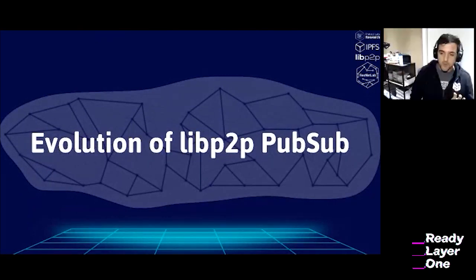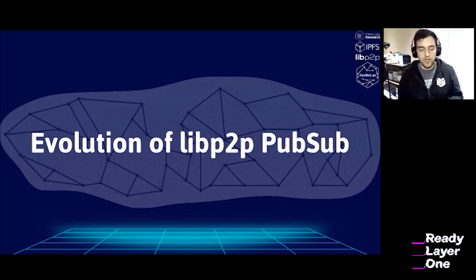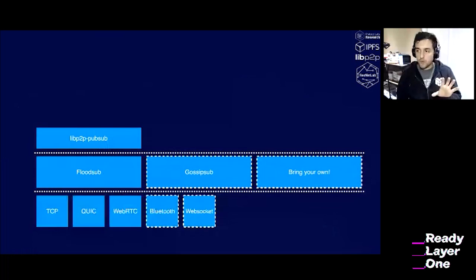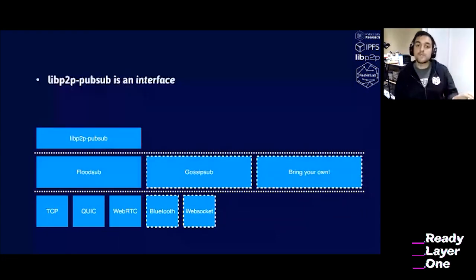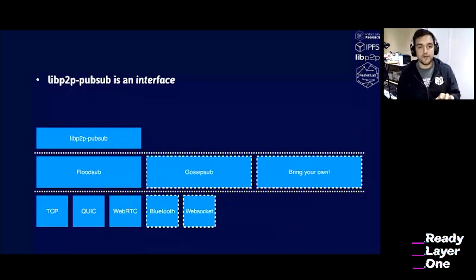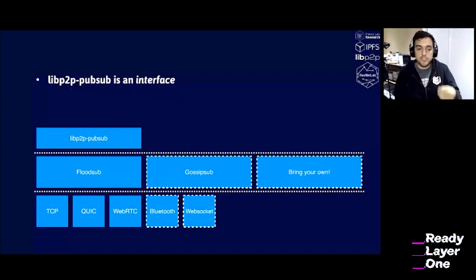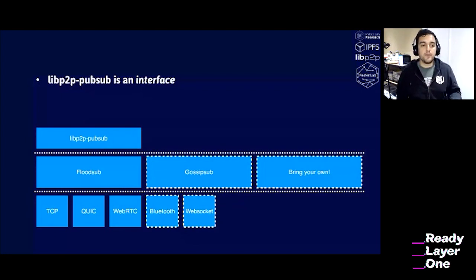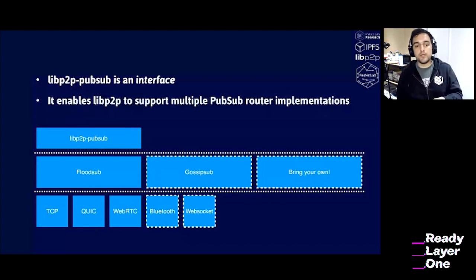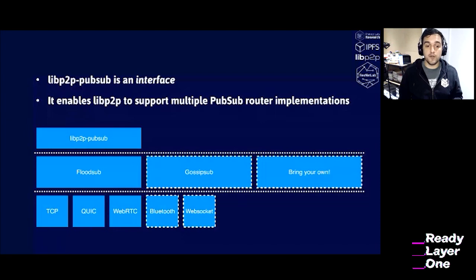I want to clarify: you hear me say libp2p PubSub, then GossipSub, and now I'm introducing FloodSub. Think of libp2p PubSub as an interface — the interface that apps built on top of libp2p consume: subscribe and publish. Things like FloodSub and GossipSub are routers — the subsystem that teaches libp2p how to set up its own topology, how to propagate messages, how to add nodes to a specific mesh. Because libp2p PubSub is an interface, we can have multiple PubSub routers giving different kinds of guarantees. Today we have two robust implementations, FloodSub and GossipSub, but you can also bring your own.